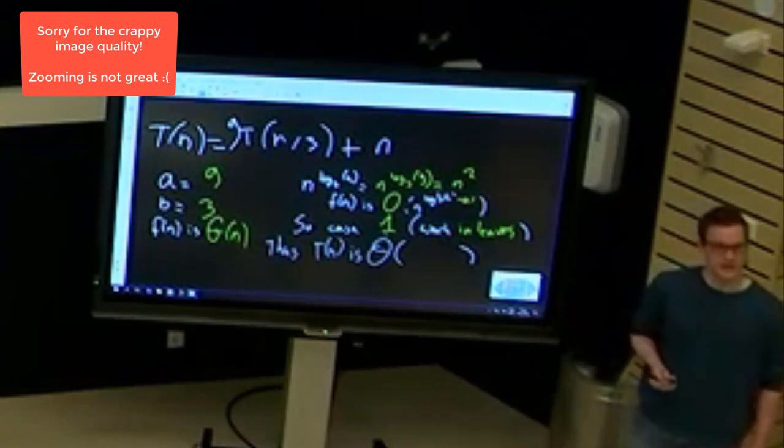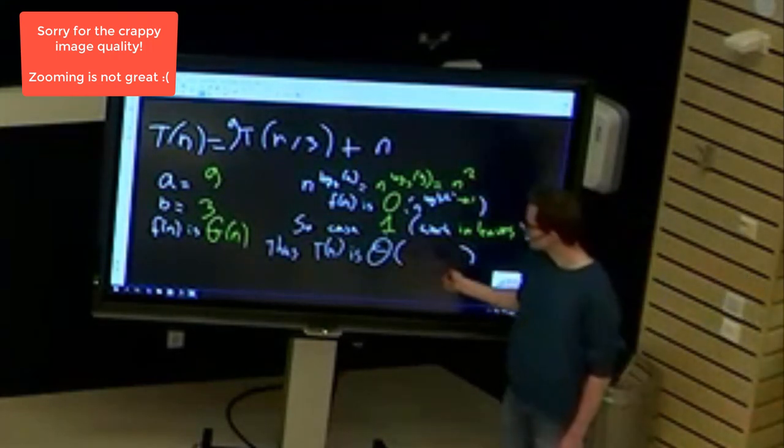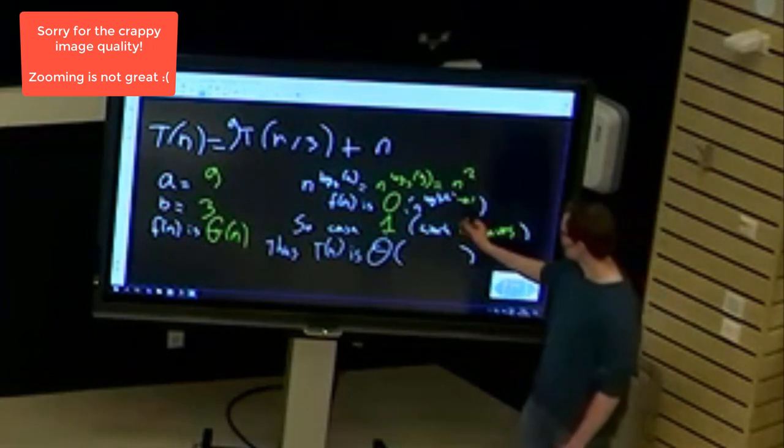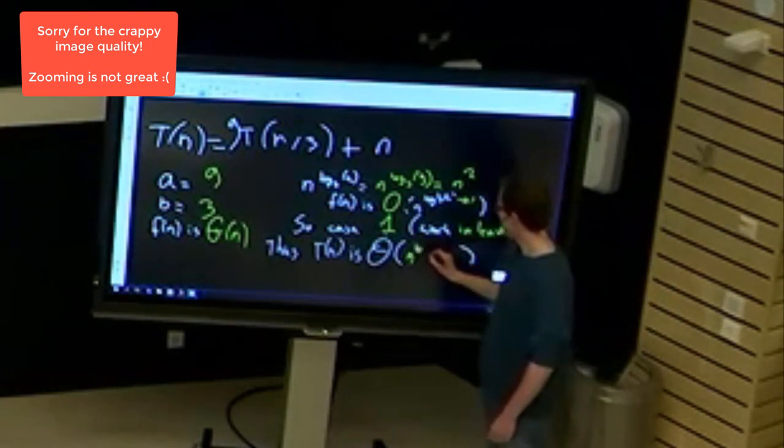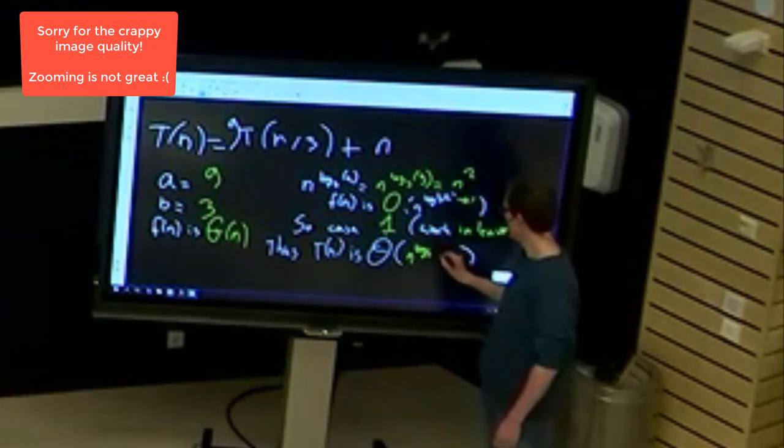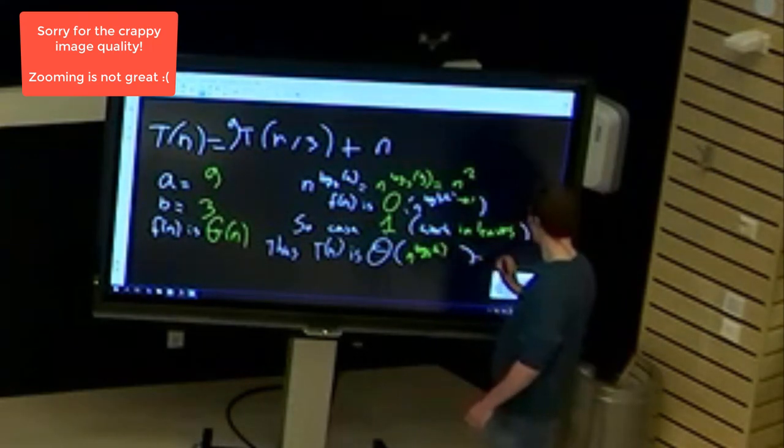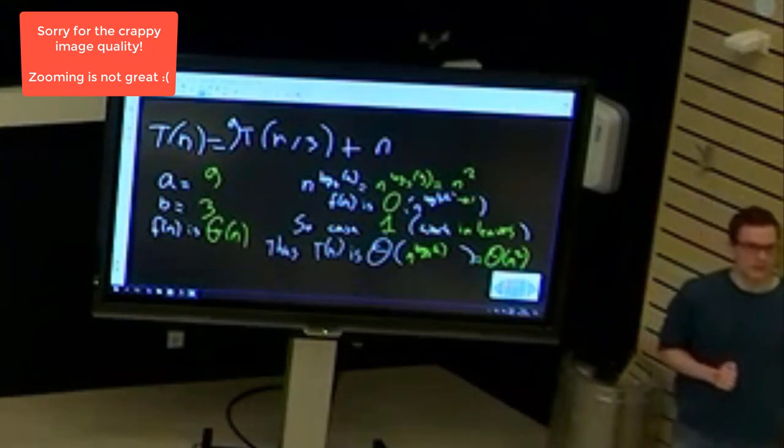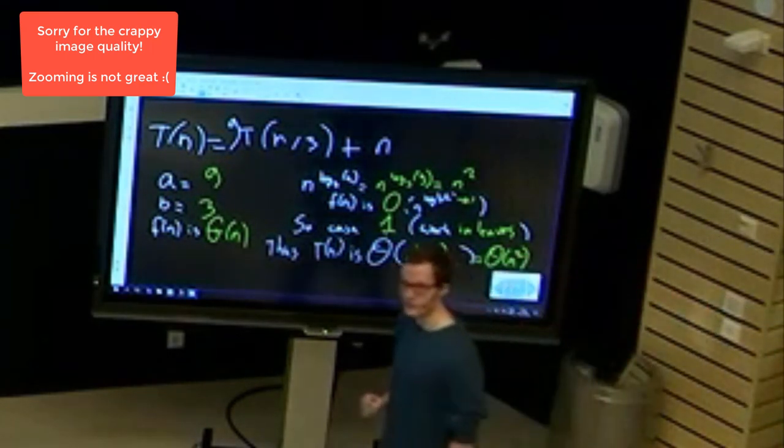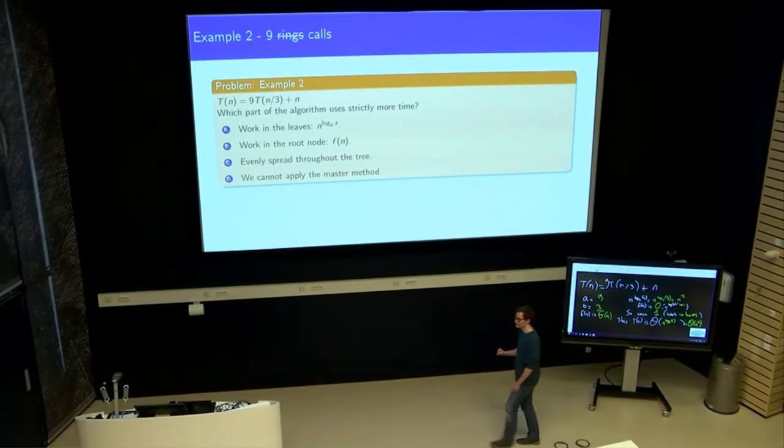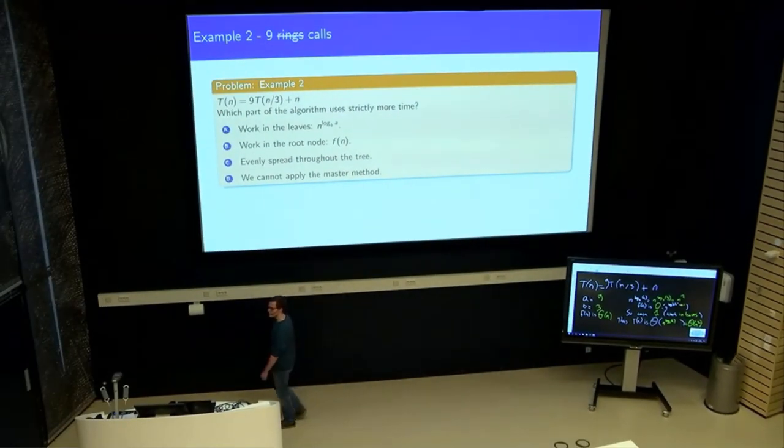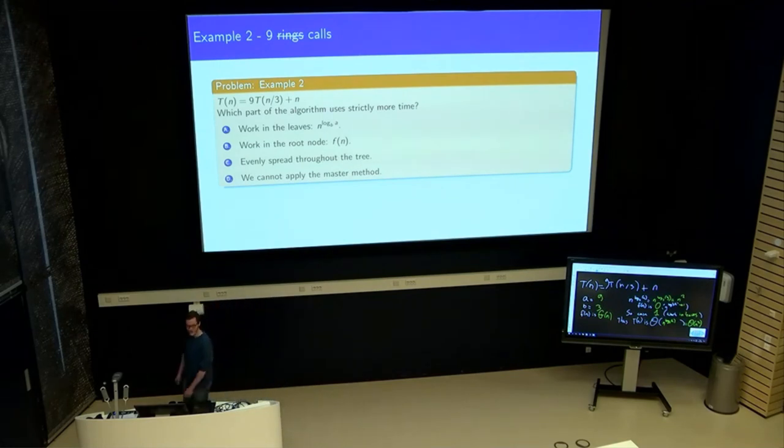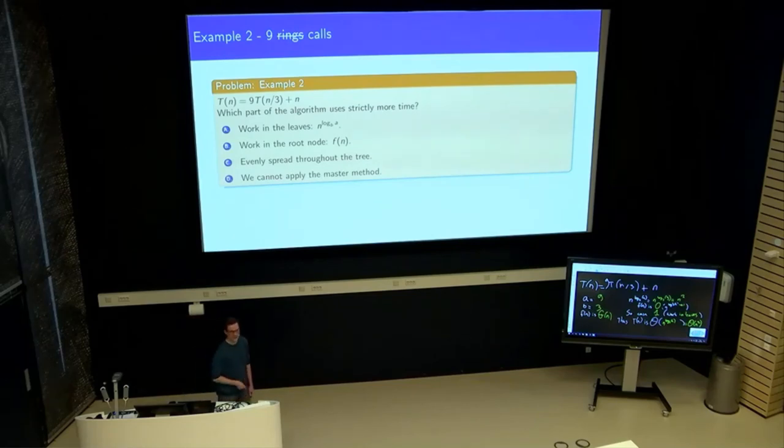And if it was case one, well then just the amount of time spent in the leaves was the bound, so in this case n to the power log_b of a, which is n squared work for this function. And I hope you see that this is definitely a lot less work than all that repeated unfolding business, thinking of a step with k and improving the whole thing with induction.